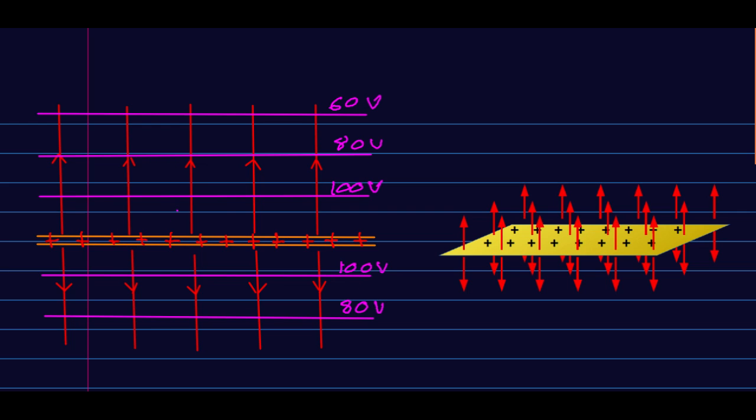However note that this is a two-dimensional picture. Fields and the things producing them are generally three-dimensional and so here's an attempt at a three-dimensional drawing of a plane of charge and the equipotential curves or lines are not curves or lines at all they are in fact surfaces which would be planes parallel to the plane of charge.